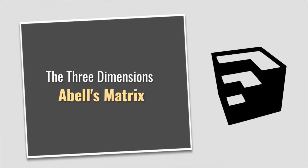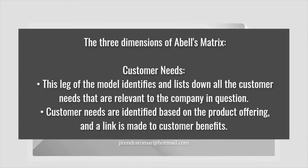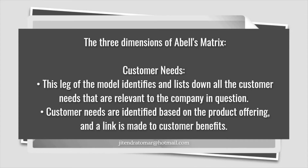The three dimensions of Abell's matrix. The first dimension is customer needs. This leg of the model identifies and lists down all the customer needs that are relevant to the company in question. Customer needs are identified based on the product offering, and a link is made to customer benefits. As an example, a software developer who has studied customer needs in relation to their product will respond by providing easy-to-install software packages, and may provide other useful options such as an antivirus, a software clean-up option, as well as manuals and tech support.